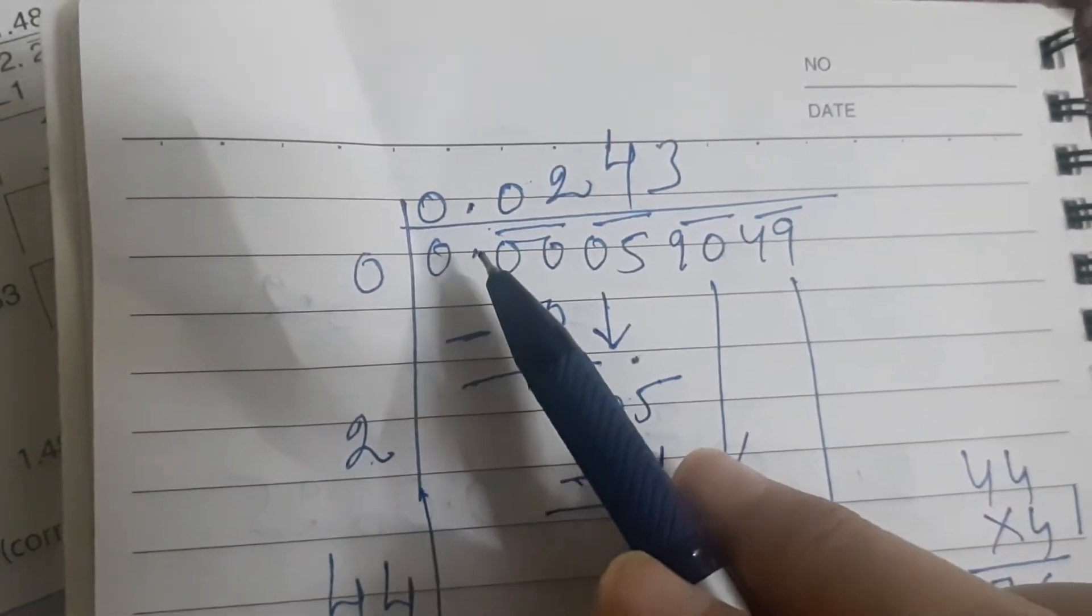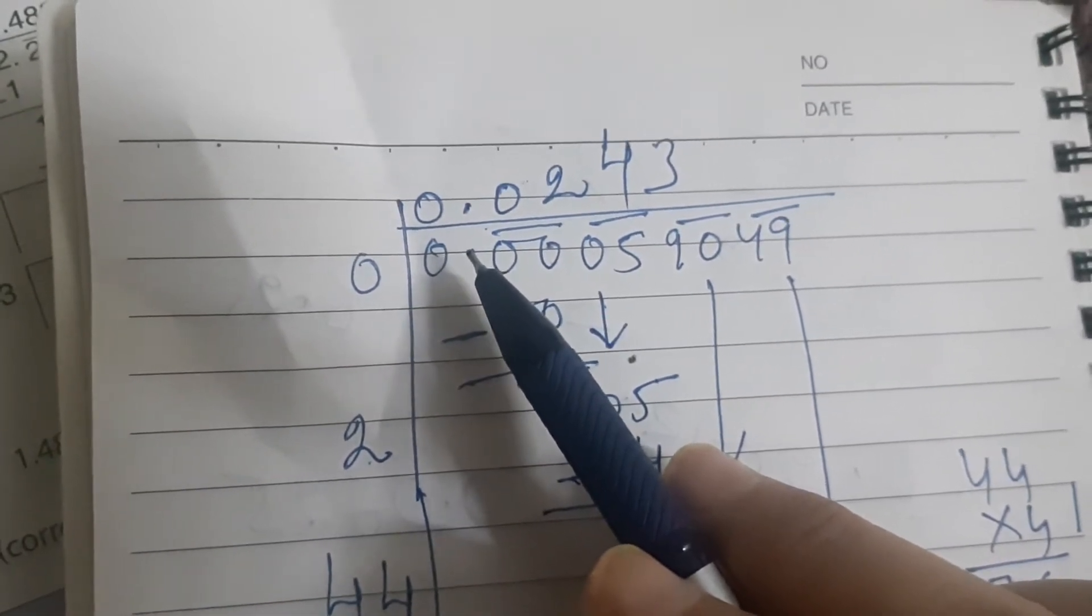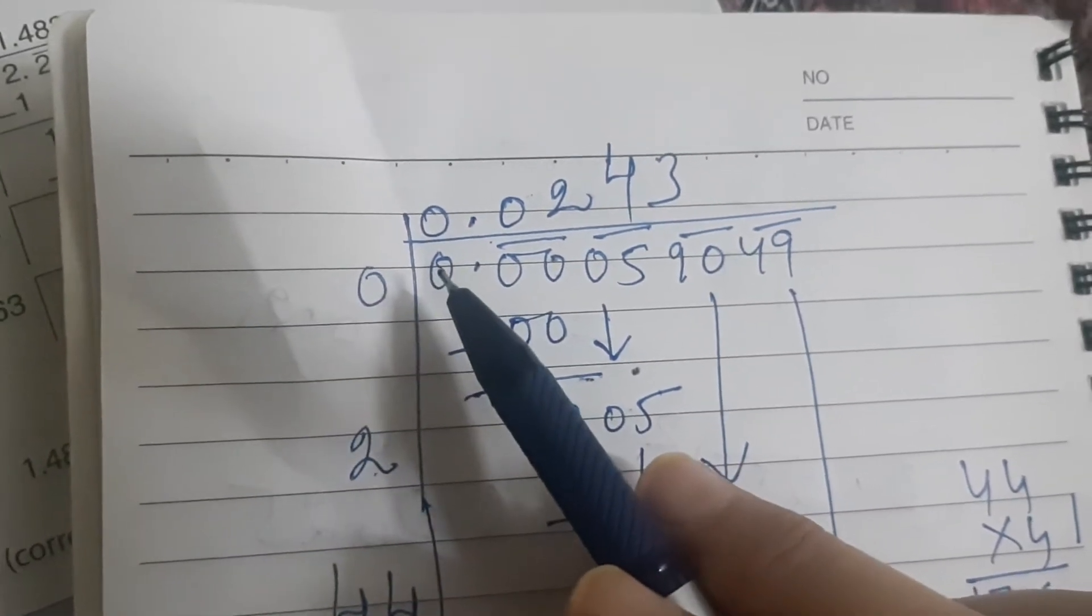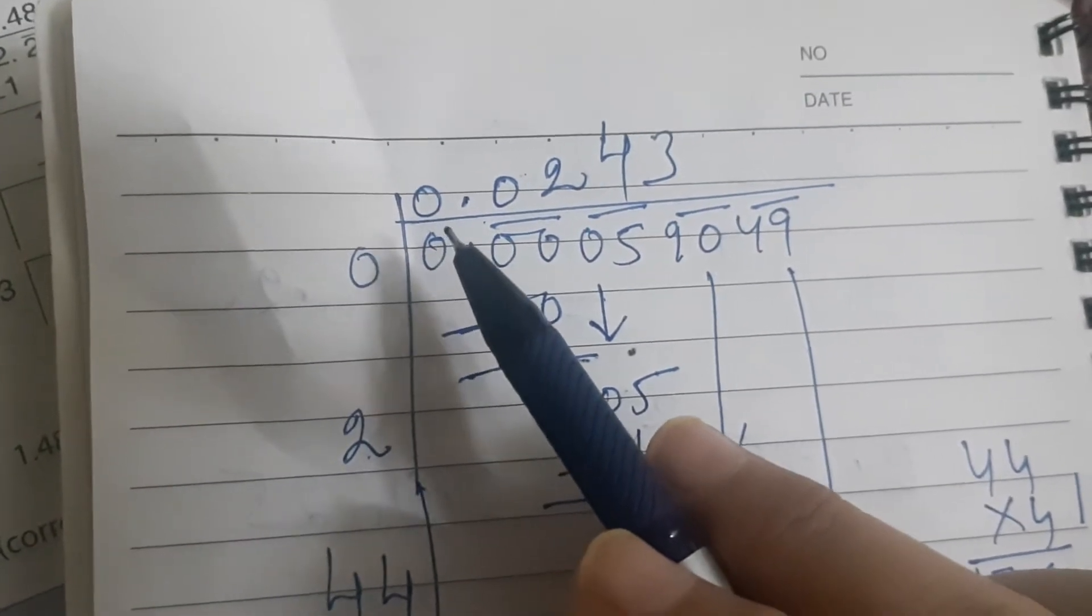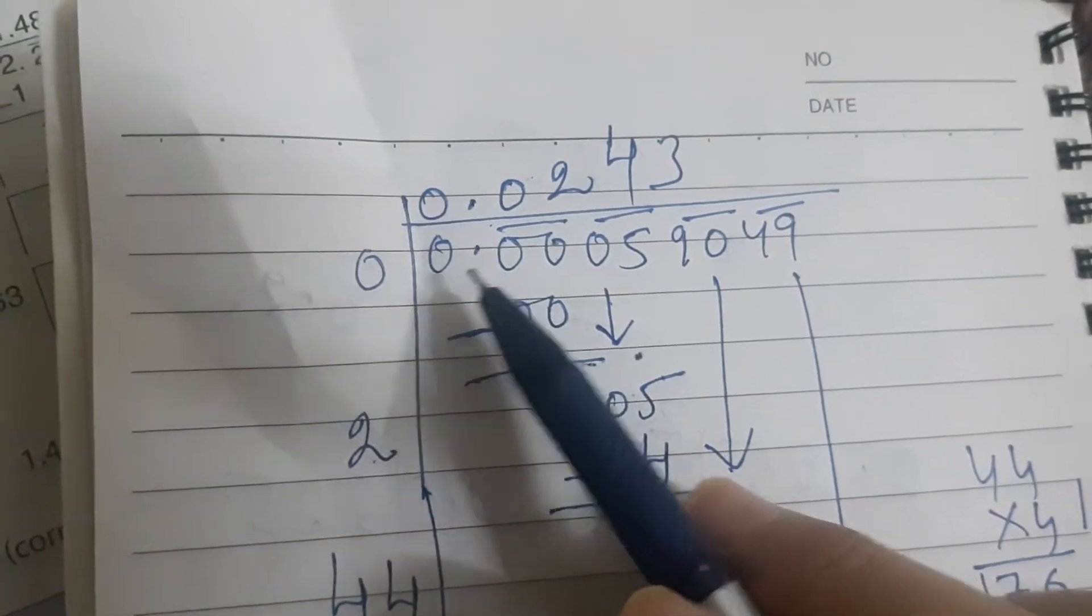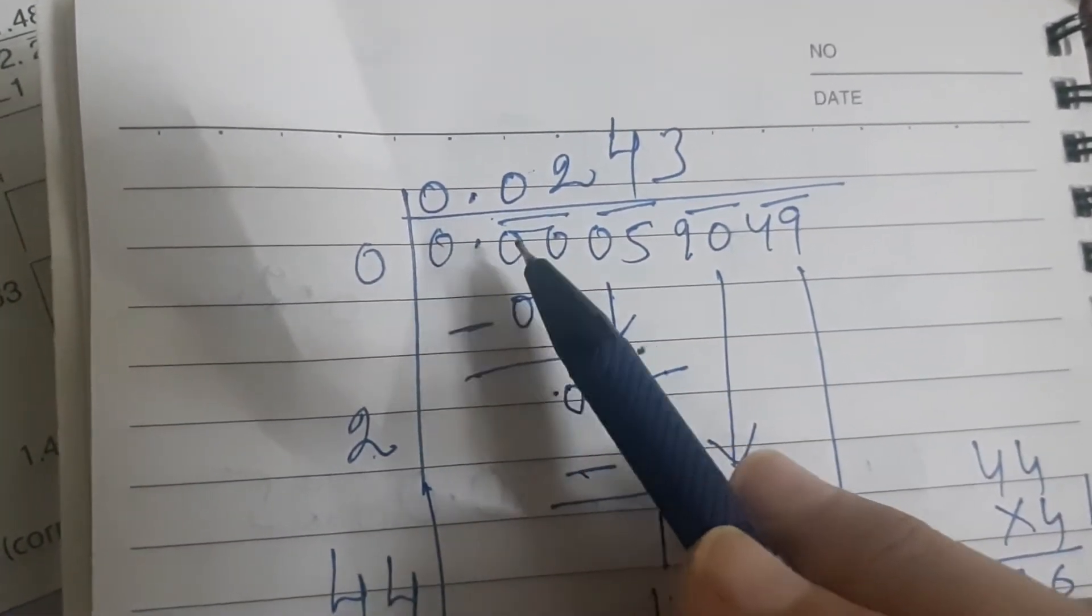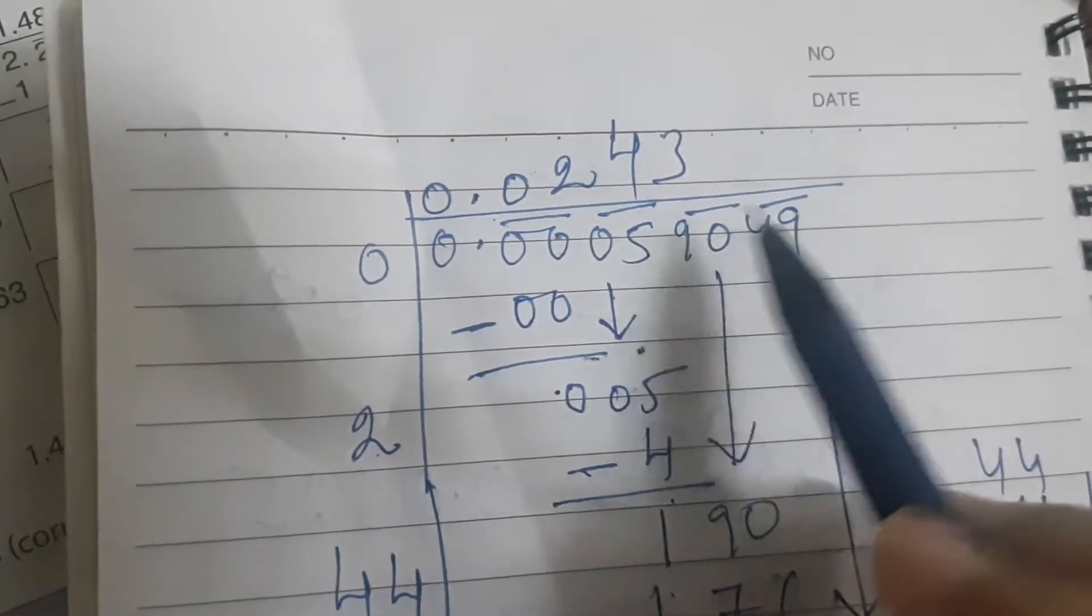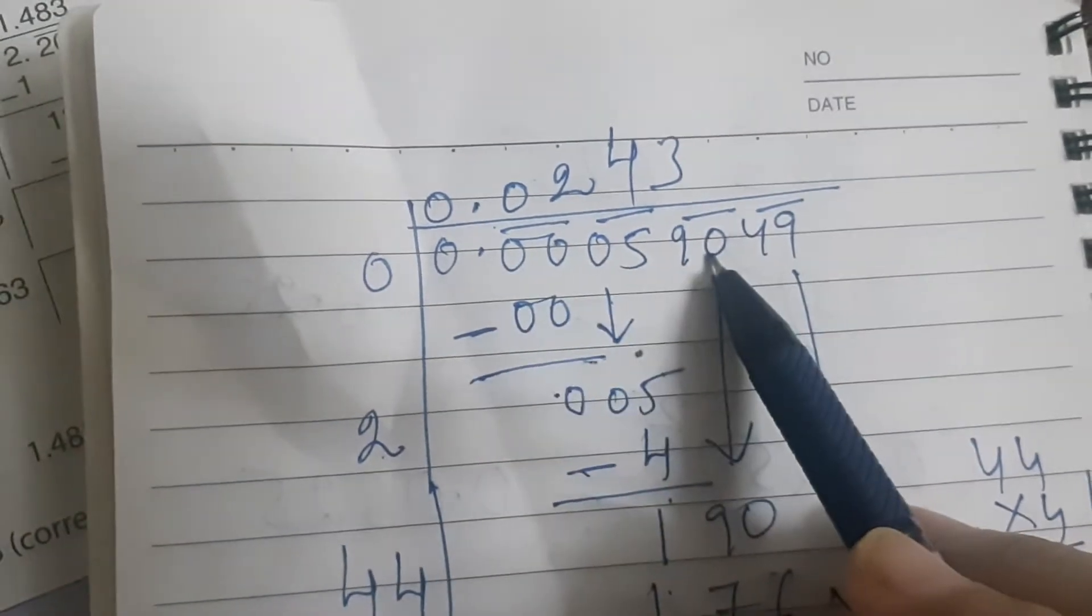And for the integral part, that means the number which is before the decimal number, we have to mark the periods from right to left. Now in this case, it is 0.00059049. That means we have digits after the decimal place.